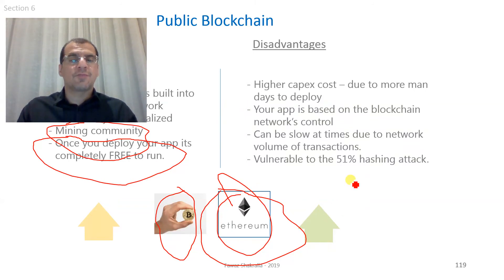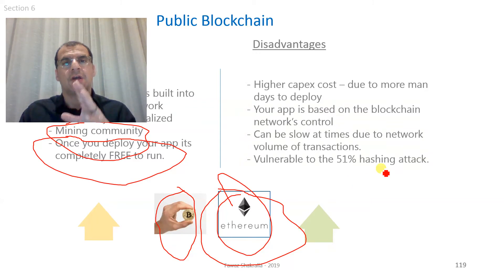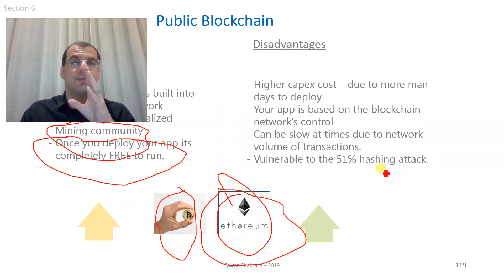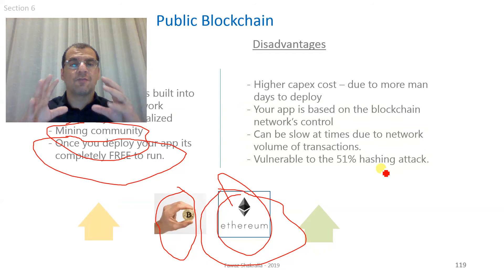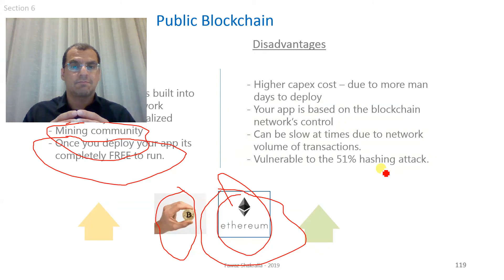Another disadvantage is vulnerability to the 51% hashing attack, which we covered earlier. This is where 51% of the entire hashing power of the mining community collude together, and they are able to actually compromise the system.